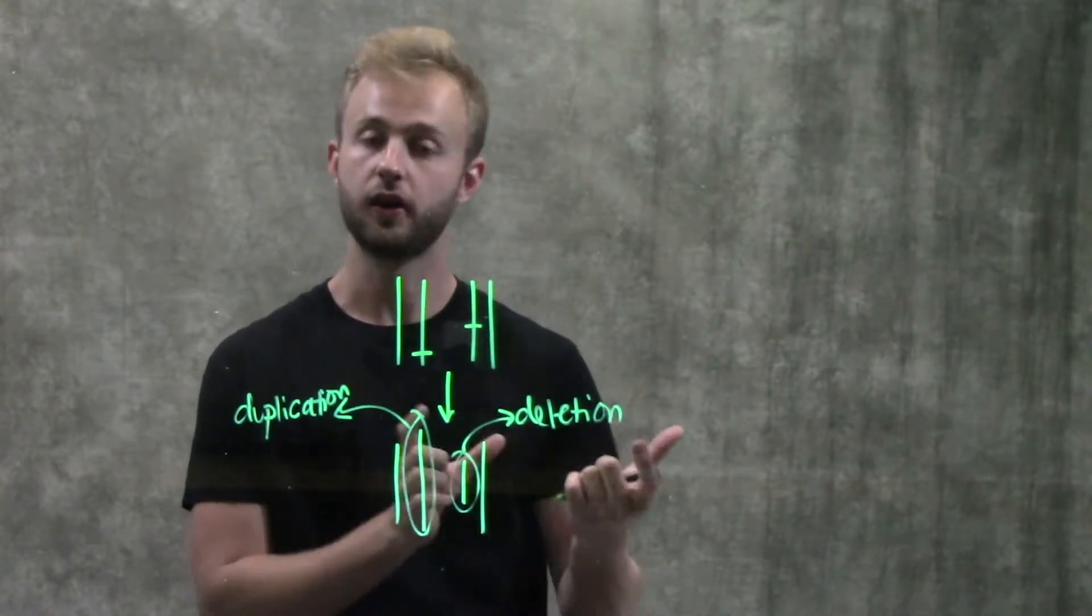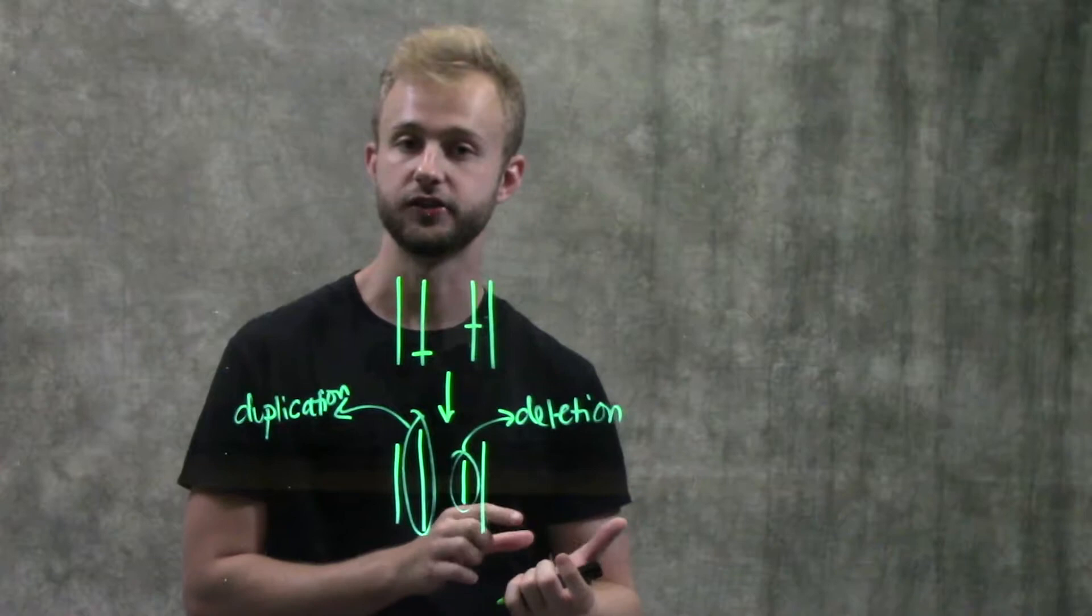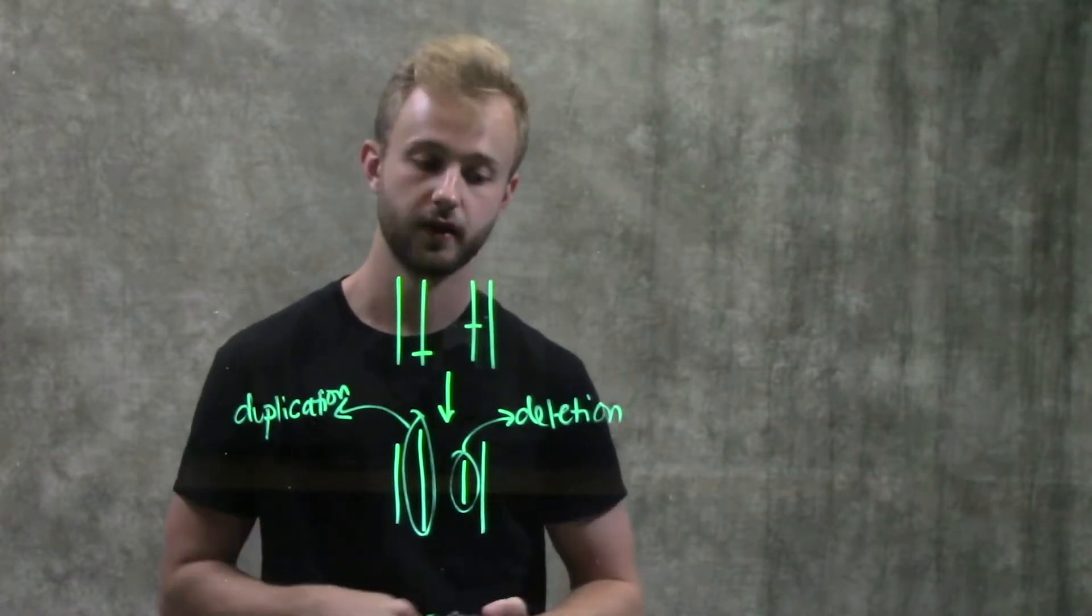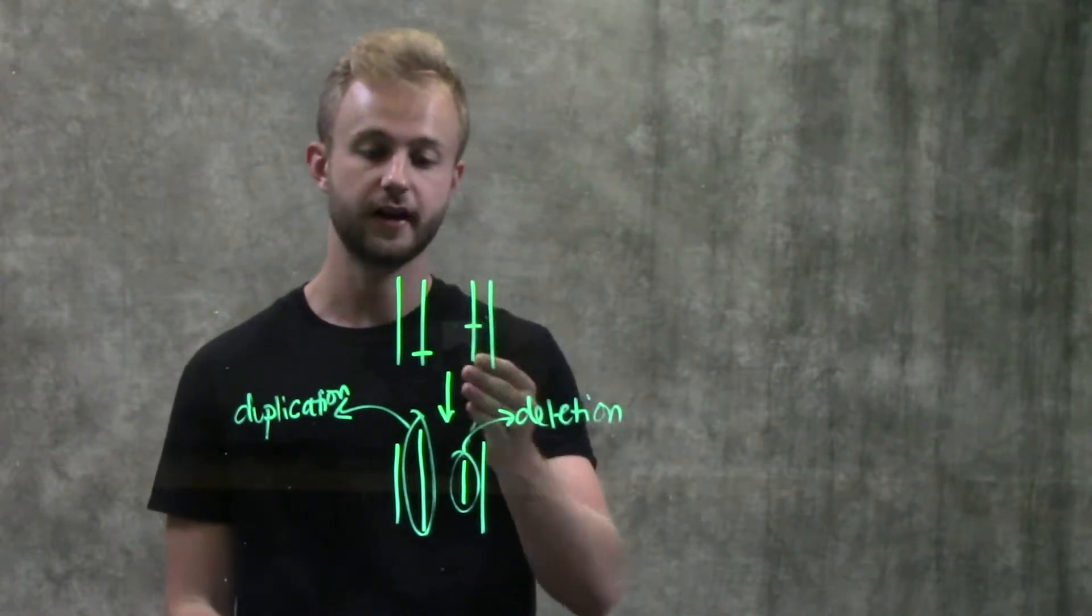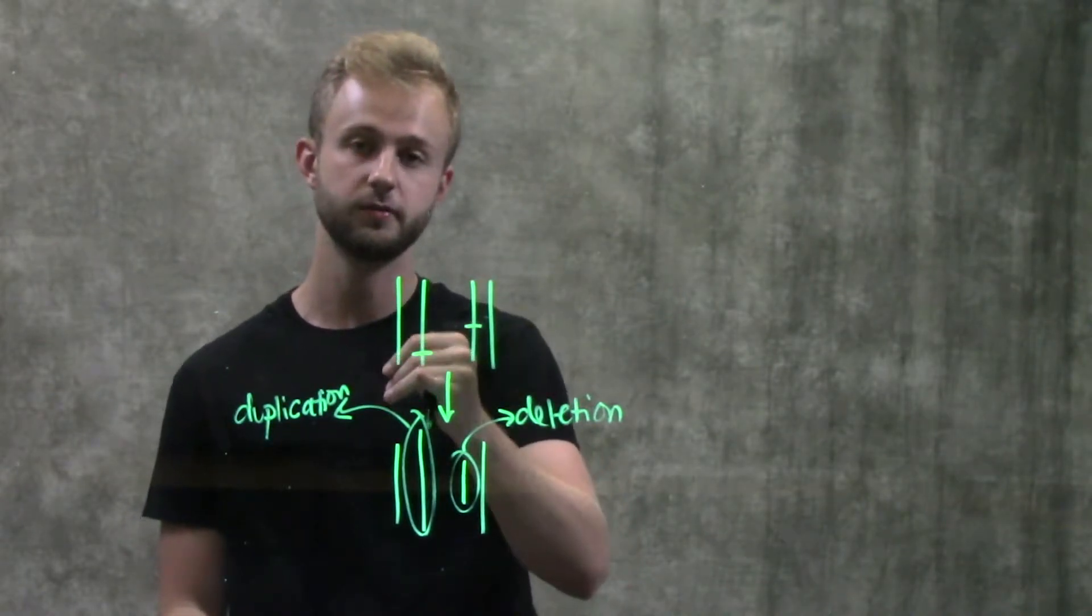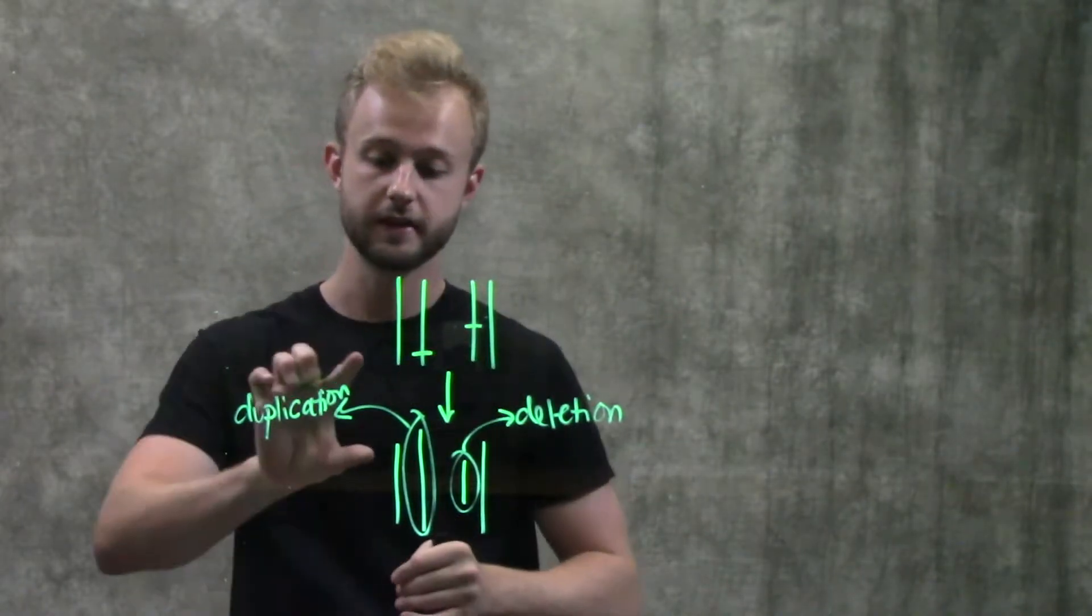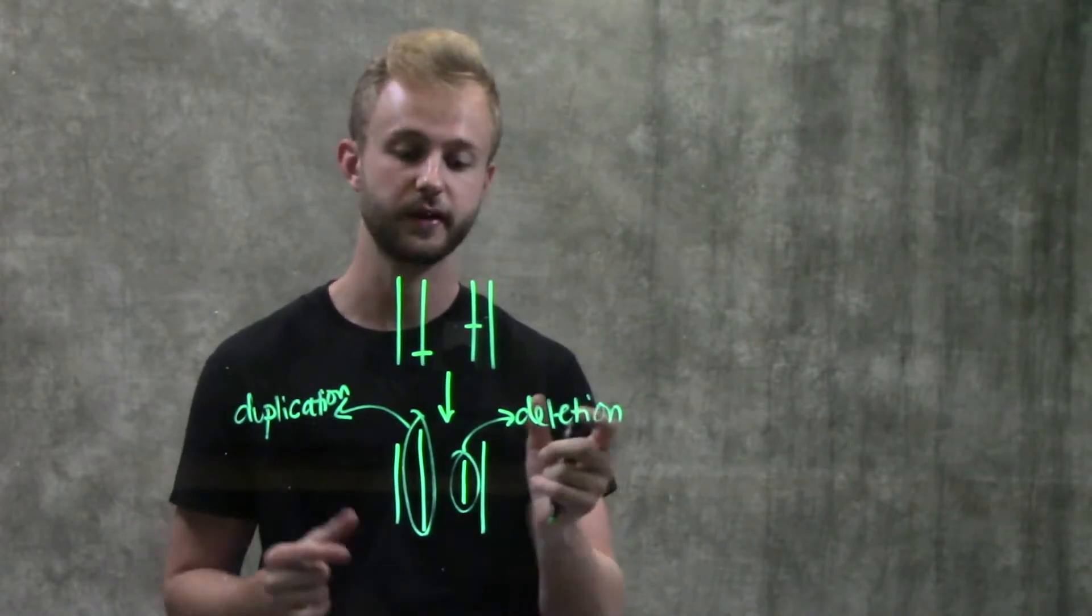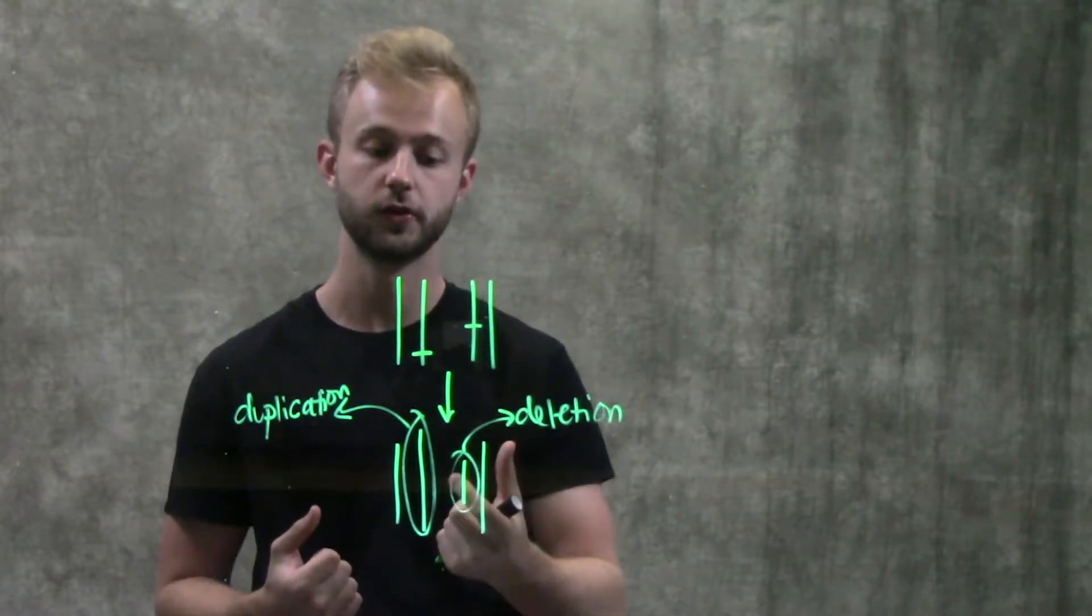Deletions can also cause other kinds of mutations in other chromosomes. If a deletion attaches to a sister chromatid or a non-sister chromatid but still a homologous chromosome, then that's when we would get this duplication because we have the same genes on those chromosomes.